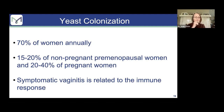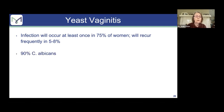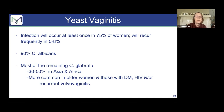If you send molecular testing, it will show yeast. I would not bother sending a culture unless you're in the situation of recurrent vaginitis. Yeast colonization is extremely common — up to 70% of women will have colonization sometime during the year, and it's more common in pregnant women. The symptoms of yeast vaginitis are caused by the immune reaction to the organism, not the organism itself. If you get the organism as an innocent bystander during a pap smear, you should ignore that. The actual infection with symptoms occurs at least once in the majority of women. Most of the time it's Candida albicans — 90% of the time. Most of the remaining 10% will be Candida glabrata, more common in Asia and Africa, also more common in older women and those with predisposing factors like diabetes, HIV, or recurrent disease.